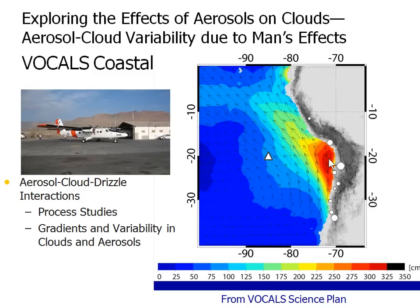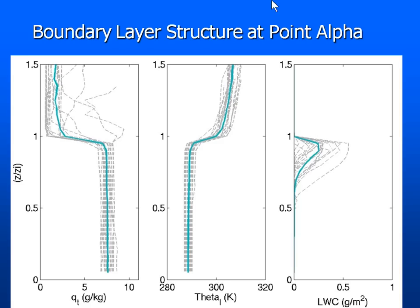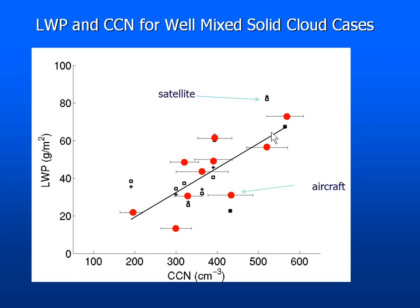We took advantage of that and used the CIRPAS Twin Otter. We don't have much range with that aircraft, so we ended up going every day to 72° 20' south — we call it Point Alpha. Just to show how consistent the boundary layer structures are, normalizing the cloud top height, we found a very consistent boundary layer structure overall, with some moisture above in some cases.